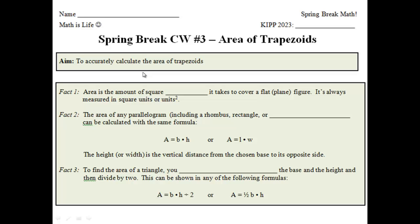Okay, so what I'd love for you to do now is take a look at fact 1 and fill in the blank. I'm pretty sure you should know it by now. This is the third time we've done it. It says area is the amount of square blank it takes to cover a flat or plain figure. It's always measured in square units or units squared. Go ahead and fill it in now, and then call out what you got. Units is the right answer. Area is the amount of square units it takes to cover a flat plain or figure.